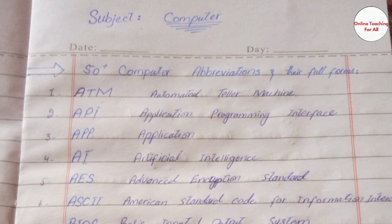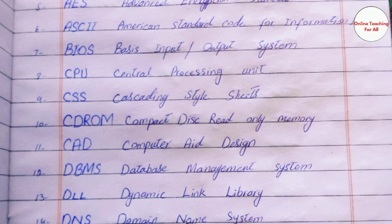We are going to start with: ATM - Automated Teller Machine. API - Application Programming Interface. APP - Application. AI - Artificial Intelligence. AES - Advanced Encryption Standard. ASCII - American Standard Code for Information Interchange. BIOS - Basic Input Output System.